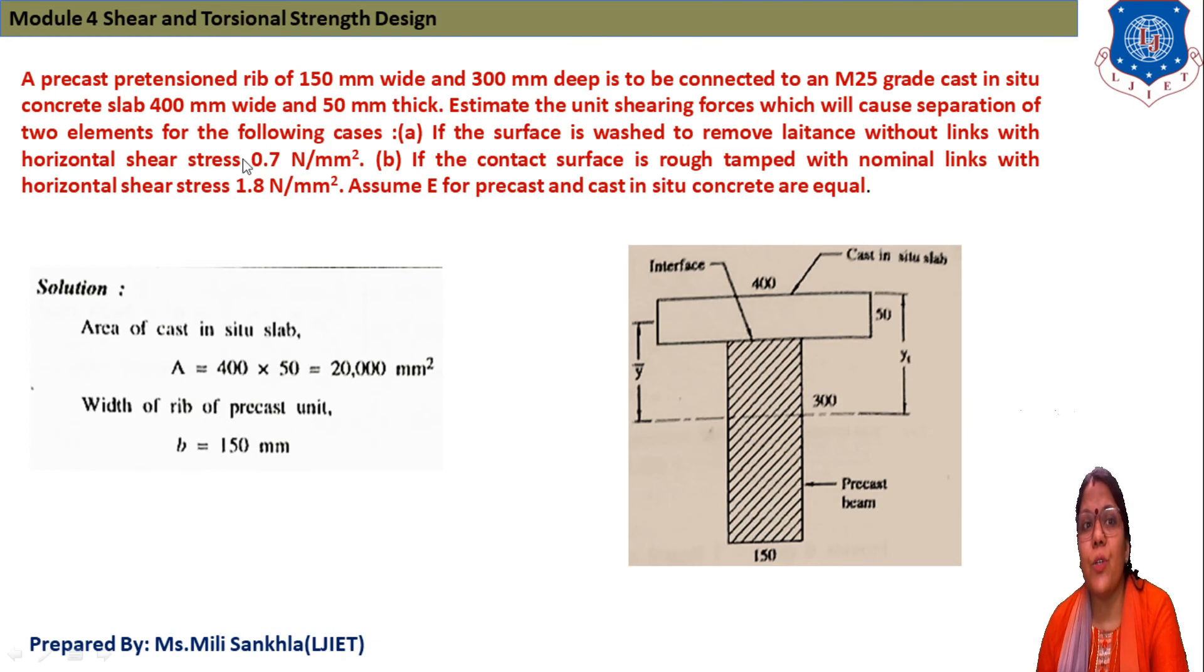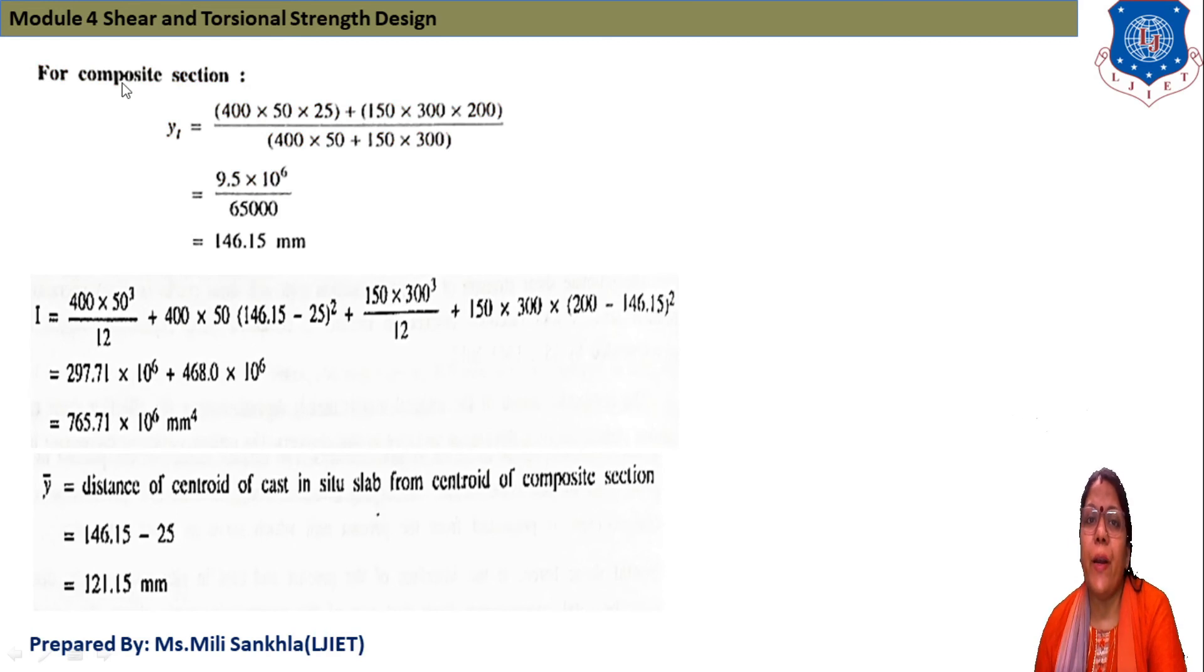With horizontal shear stress 0.7 N/mm², and if the contact surface is roughened and tampered with nominal links with horizontal shear stress 1.8 N/mm². E for Young's modulus for precast and cast-in-situ concrete are equal. Flange 400 × 50, that is cast-in-situ, and the precast beam is our web portion, 300 × 150. Now first, area of this cast-in-situ slab: 450 × 50 = 20,000. Width of rib of precast beam is 150.